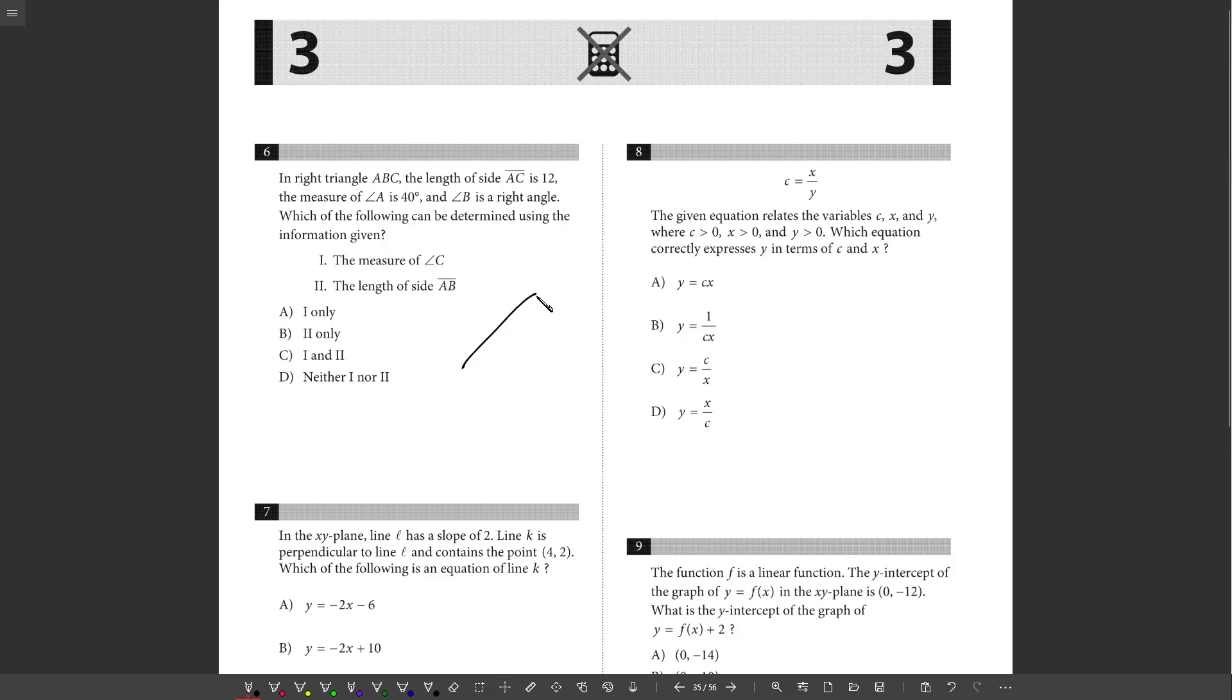Six. In right triangle ABC, B is the right angle. I'm just going to jump ahead a little bit. So here's A, here's C. The length of side AC is 12. The measure of A is 40. So that means that's 50, because I've got to add up to 180.